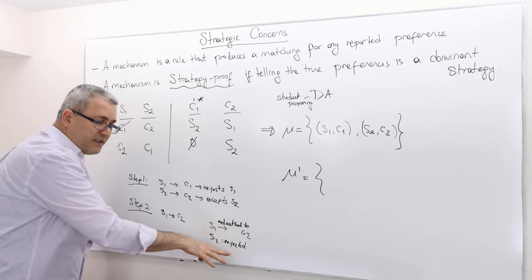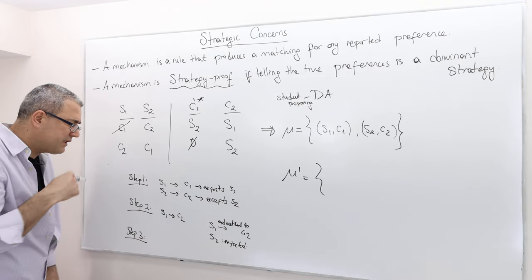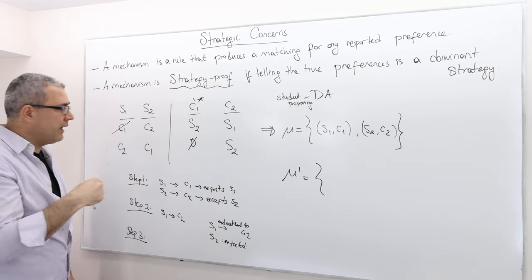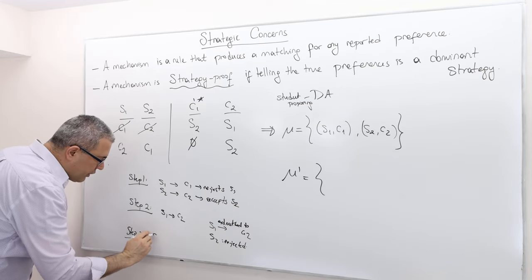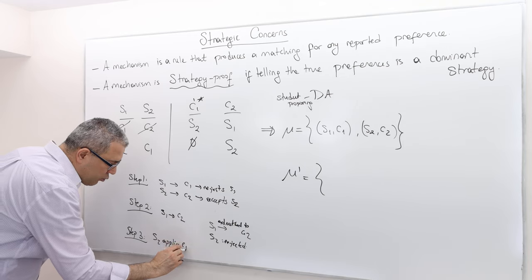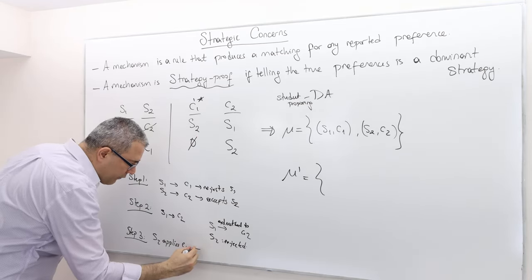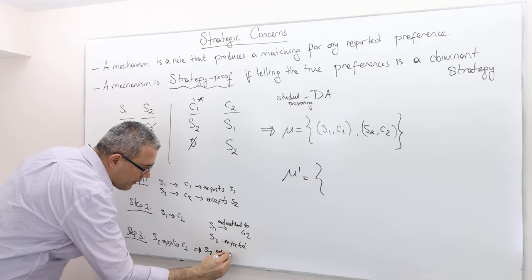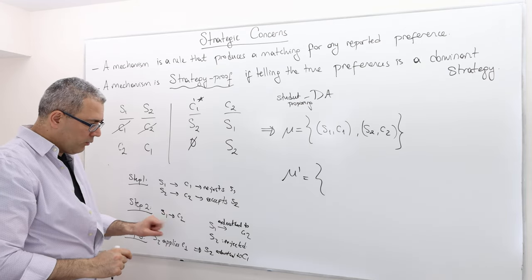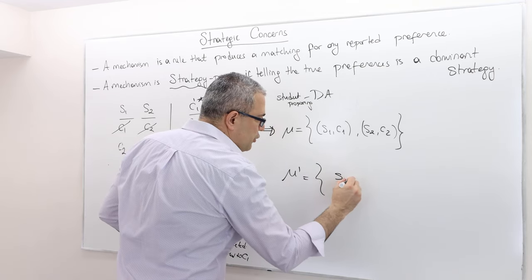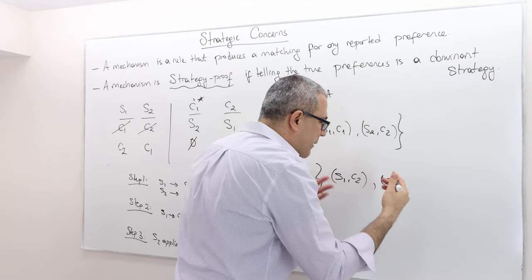Since Student 2 has been rejected and is still unmatched, the process moves to Step 3. In Step 3, only Student 2 makes an application. You cannot apply to a college where you have been rejected, so Student 2 applies to College 1. College 1 receives only one applicant, Student 2, who is acceptable. Therefore, Student 2 is matched to College 1. So Mu prime is: Student 1 matched with College 2, and Student 2 matched with College 1.